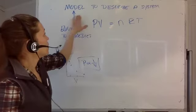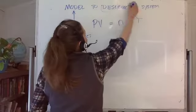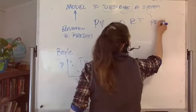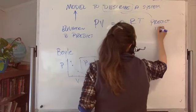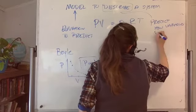So model to describe a system. So to describe part, this is a way to predict how the variables will change.